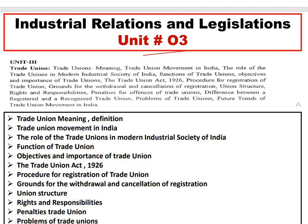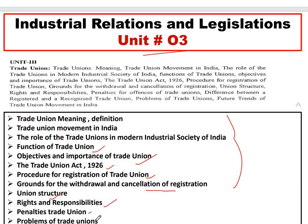So these are the contents which I am going to cover: the meaning and definition of trade union, trade union movement in India, the role of trade union in modern industrial society of India, function of trade union, objective and importance of trade union, Trade Union Act 1926, the procedure for the registration of trade union, the cancellation of trade union, trade union structure, rights and responsibility of trade union, penalty of trade union and problems of trade union. So all this I am going to cover in this video.